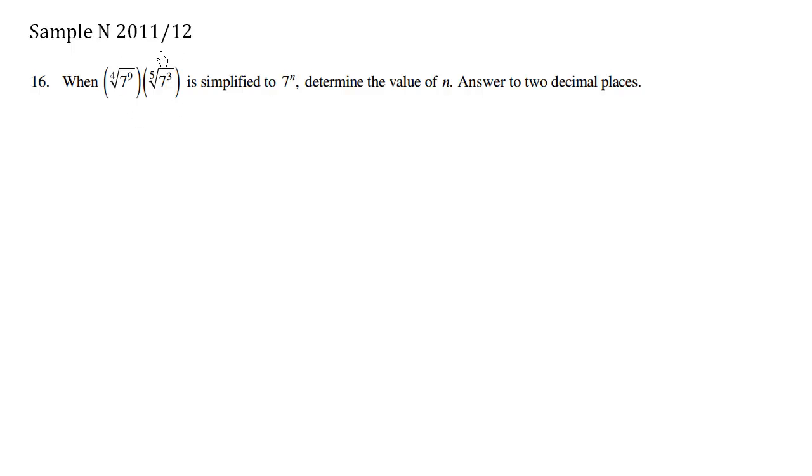So we have these radical symbols again. When this is simplified to 7 to the n, determine the value of n, answer to two decimal places.